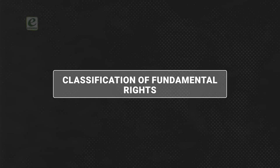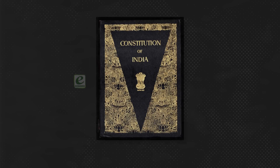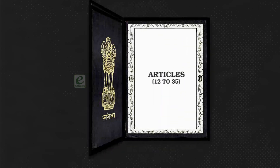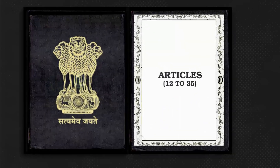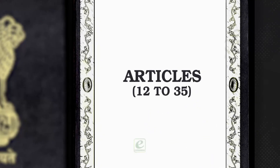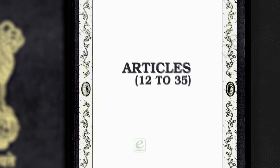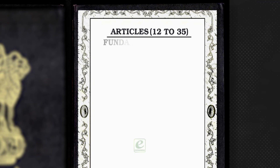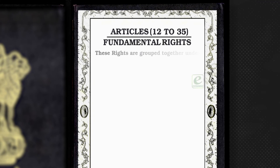Classification of Fundamental Rights. Articles 12 to 35 of the Constitution deal with fundamental rights. These rights are grouped together under the following six categories.